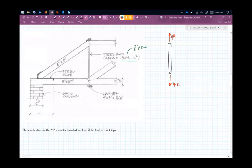And we know our area, again the area we're talking about is this cross sectional area. So the area is 0.302 inches squared.